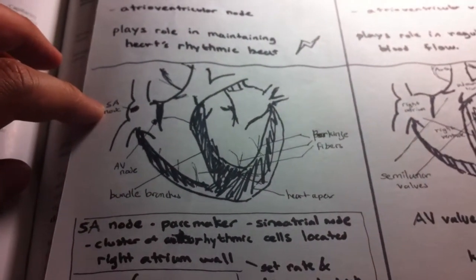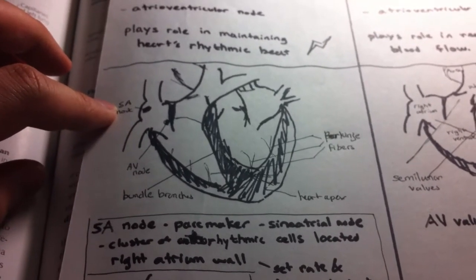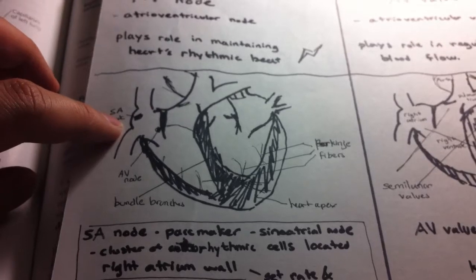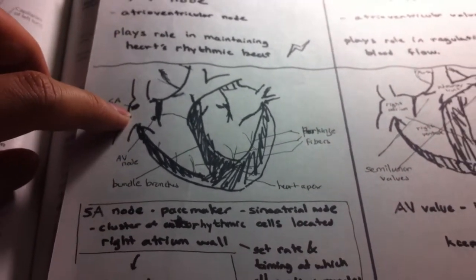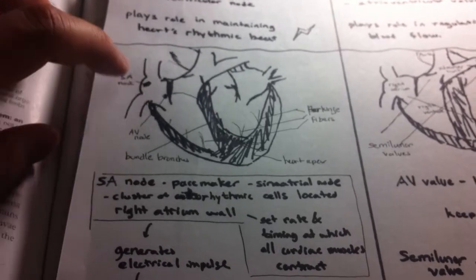The key player is actually the SA node, also known as the pacemaker or sinoatrial node, and it's going to be a cluster of auto-rhythmic cells located at the right atrium wall. This SA node sets the rate and timing at which all cardiac muscles contract.